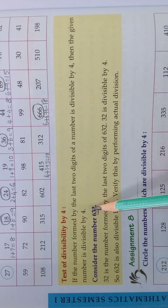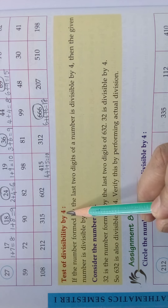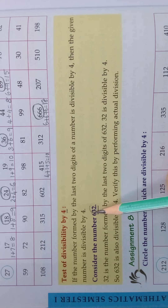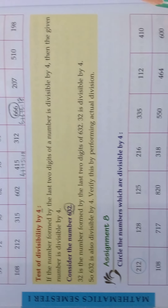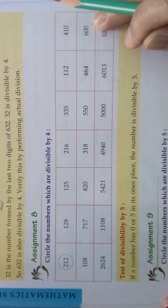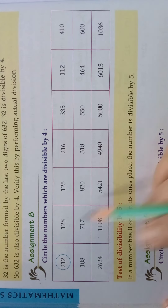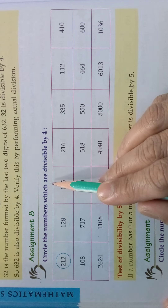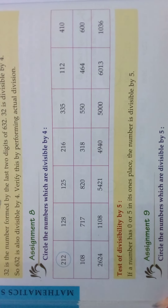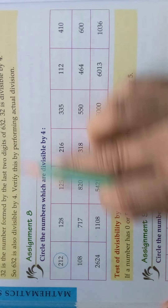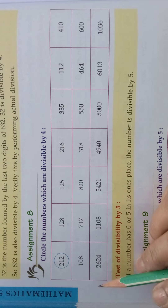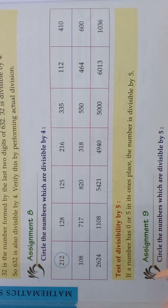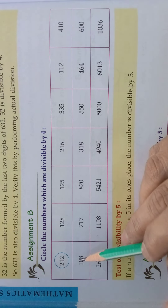So what we should do: for divisibility by 4, we should take the last 2 digits and check whether it is divisible by 4 or not. Come, we will do assignment 8 — circle the numbers which are divisible by 4. So many numbers are given here, large numbers and small numbers. We should take each and every number.